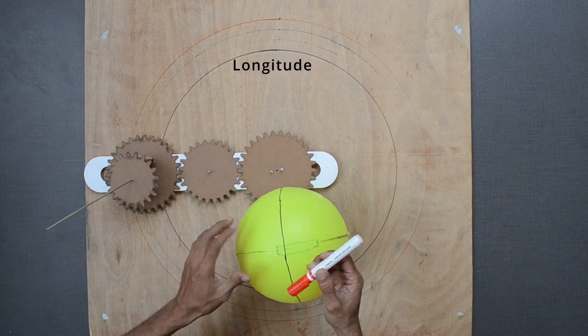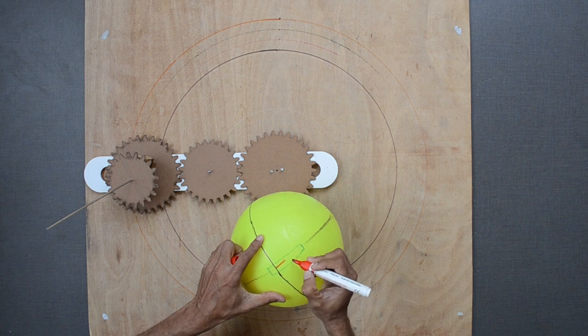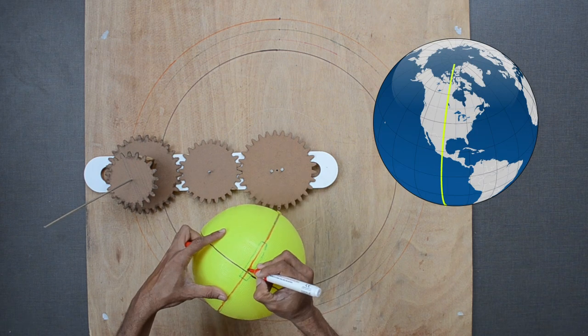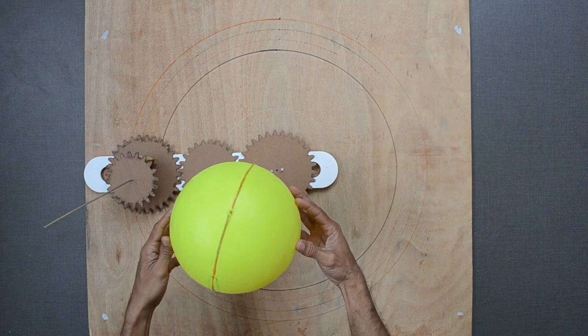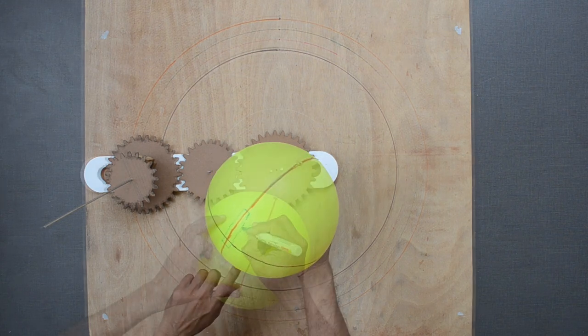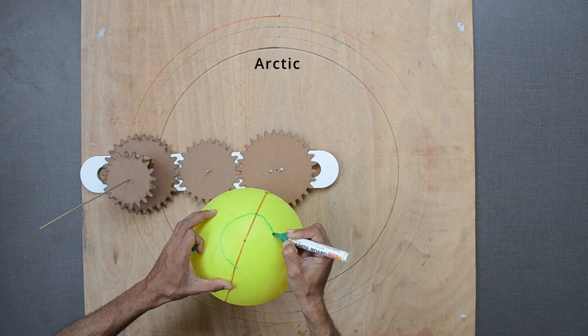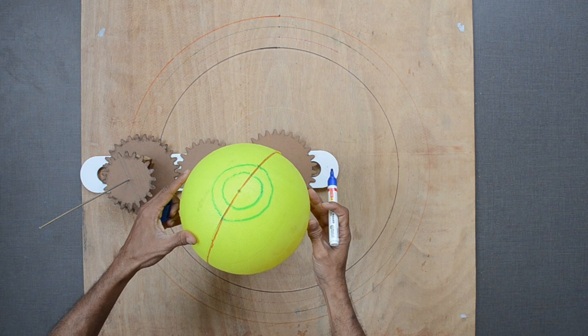Let us mark one red line here. Longitudes are vertical lines from North Pole to South Pole. These lines divide Earth vertically into two halves: Western Hemisphere and Eastern Hemisphere. The Arctic Circle is marked in green, while Antarctic Circle is marked in blue.